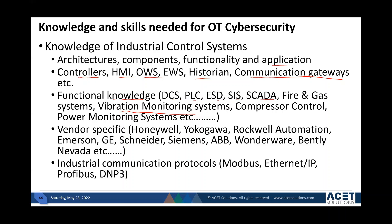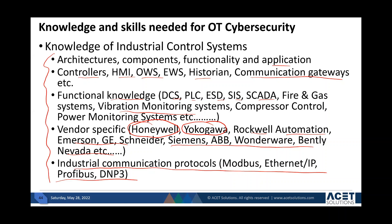You also need vendor-specific knowledge, because in a control systems environment every vendor has their own architecture. Honeywell's architecture is different from Yokogawa's — their components, connectivity, and communication protocols are all different. Depending on what is installed at a client's facility, you need to know the details of each. Industrial communication protocols are very important: when securing networks you need to know what protocols are on the network, how data flows between components, what to allow and what not to allow, and what happens if Modbus communication goes down. It's a tall order, but the more you learn about industrial control systems, the better equipped you'll be.